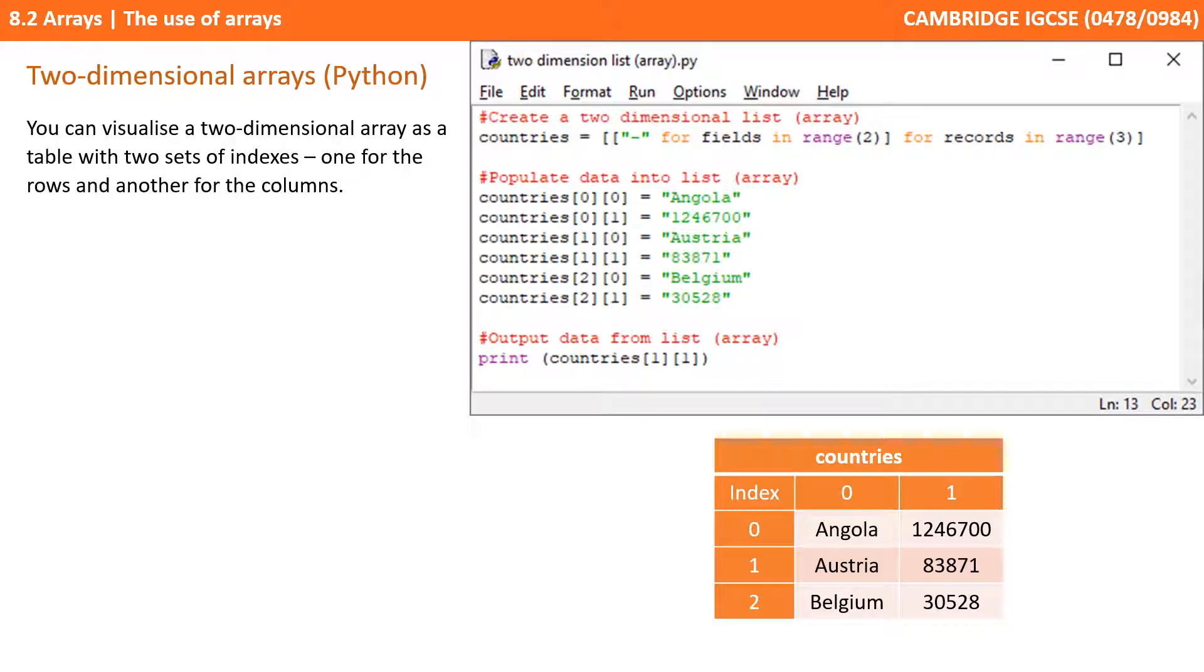We can then insert an item into the new location at the end of the array using its index. Now, in the exam you need to be able to use both 1 and what we call 2 dimensional arrays. You can visualize a 2 dimensional array as a table with 2 sets of indexes. One for the rows and another for the columns. Otherwise, it works in exactly the same way.